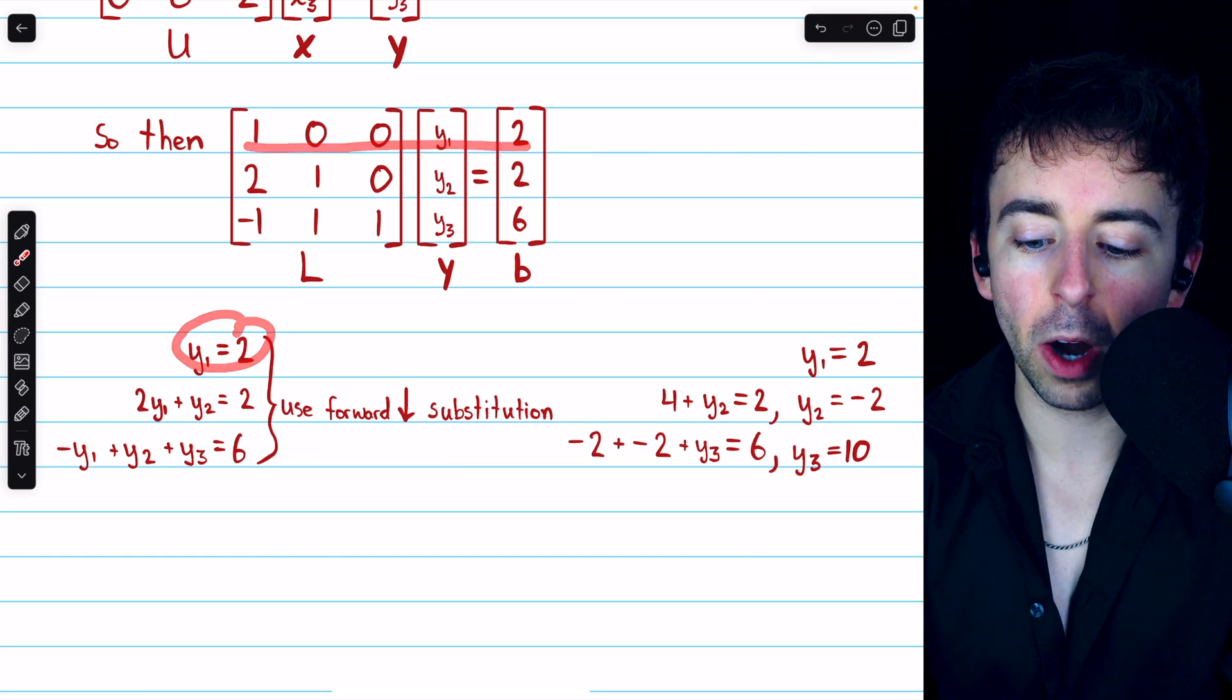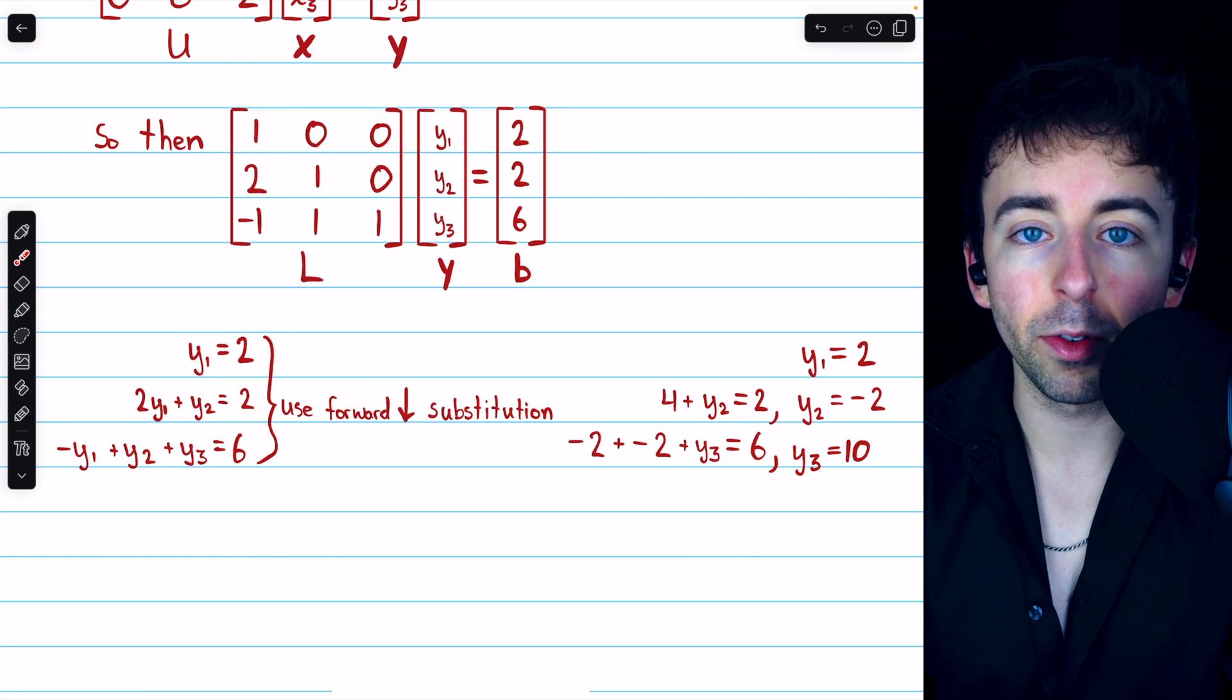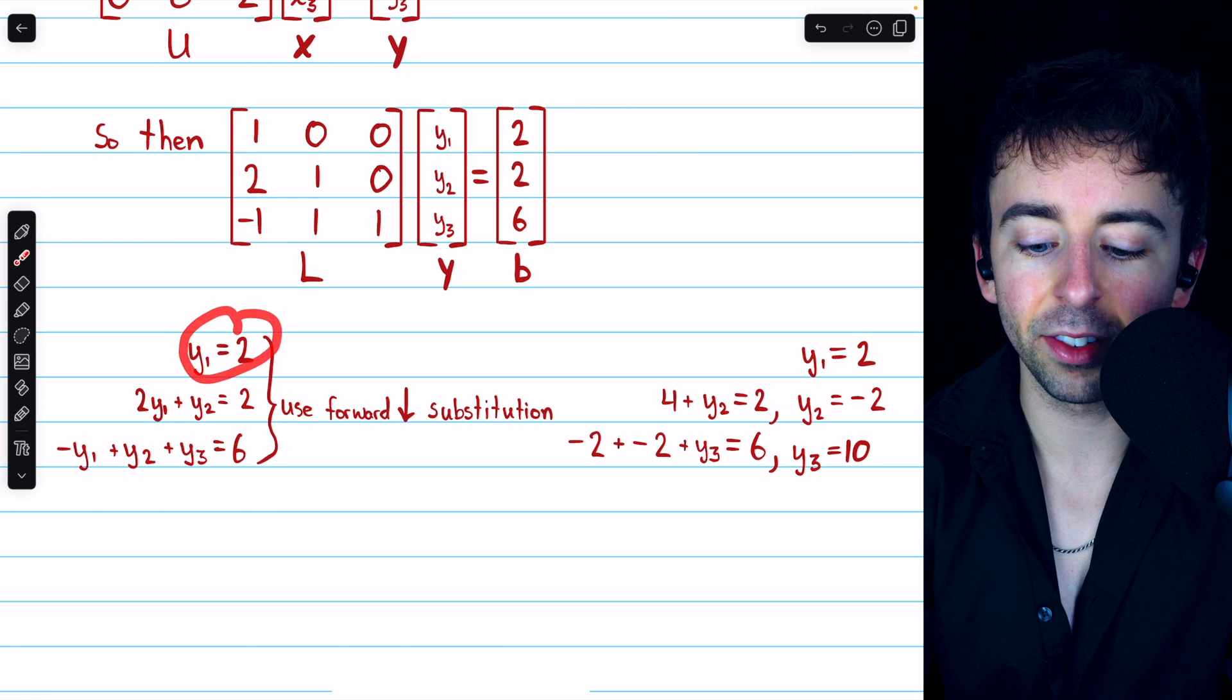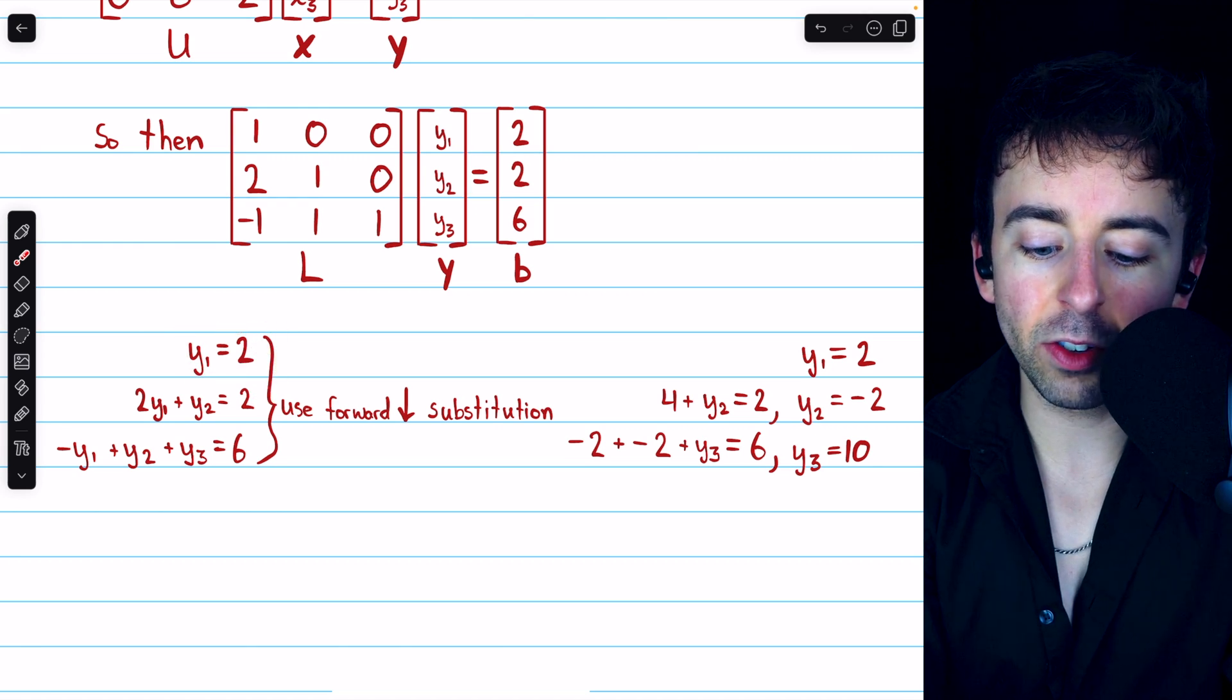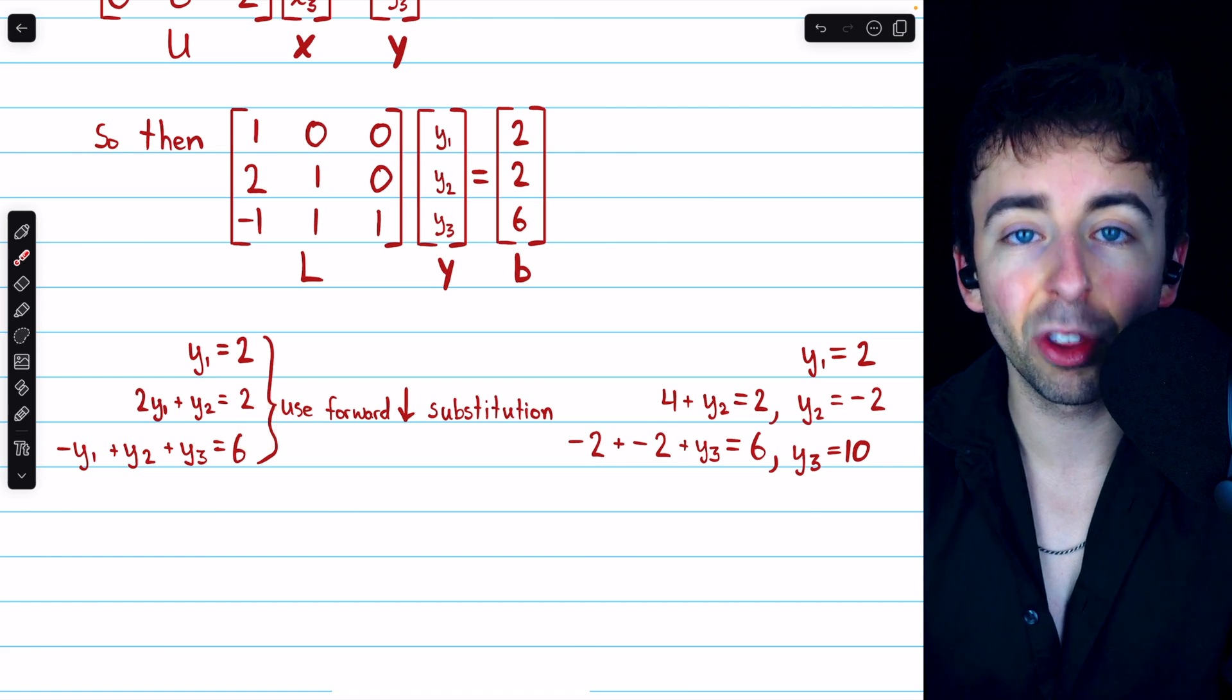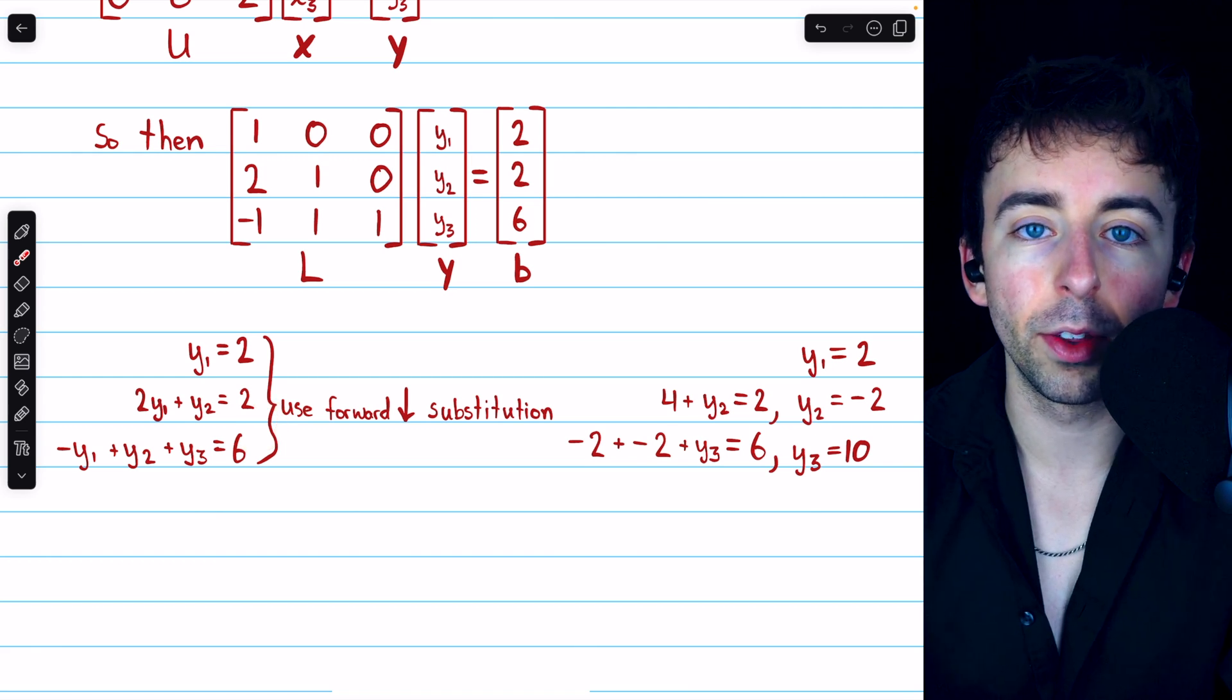That means the first equation, corresponding to the first row, gives us our first variable value. In this case, it tells us that Y1 equals 2, and then we can plug that into the next equation, and plug what we find into the third equation, thus solving for all the variables.